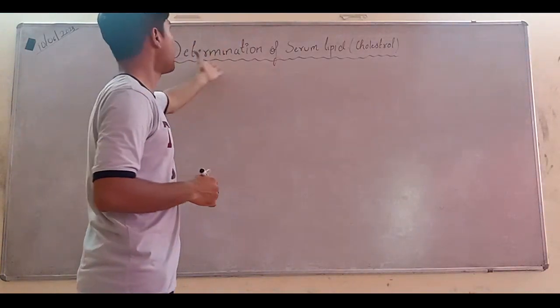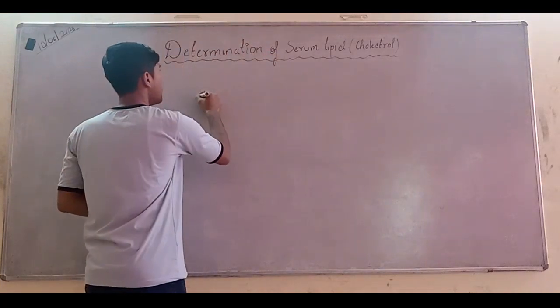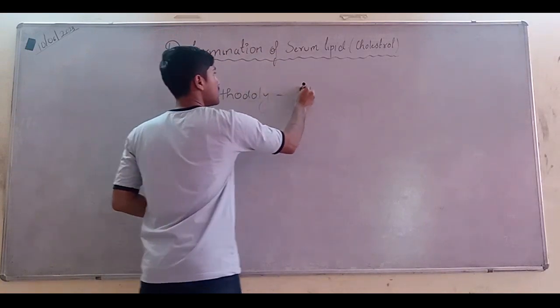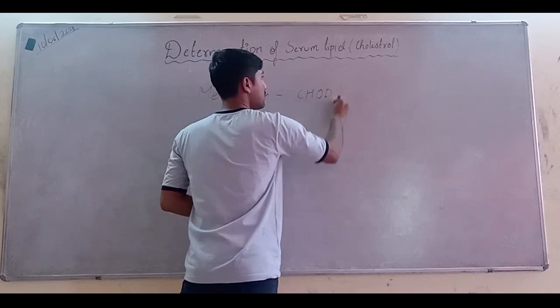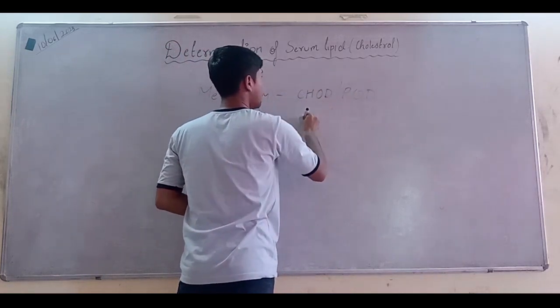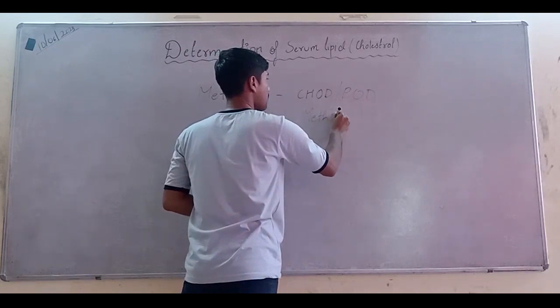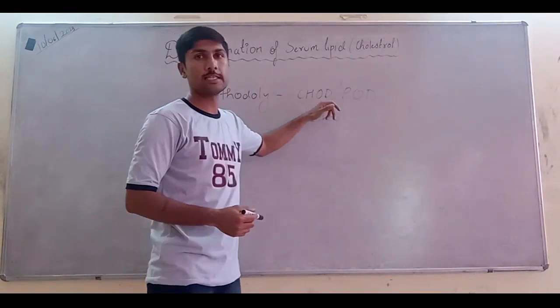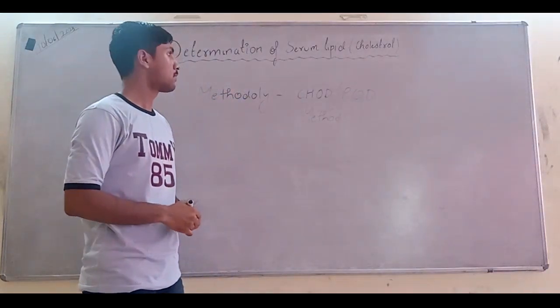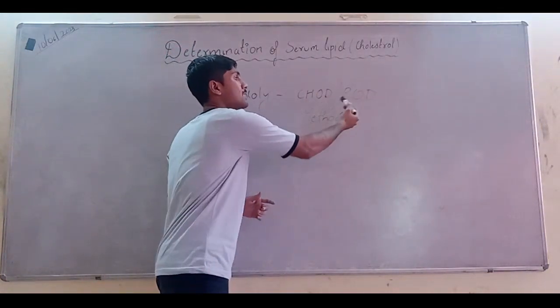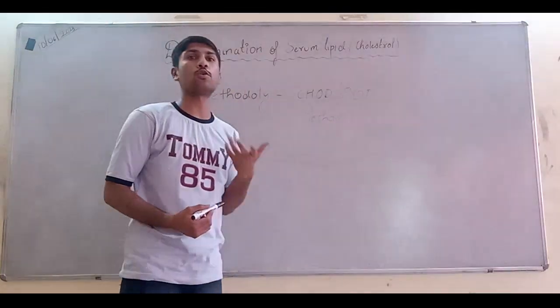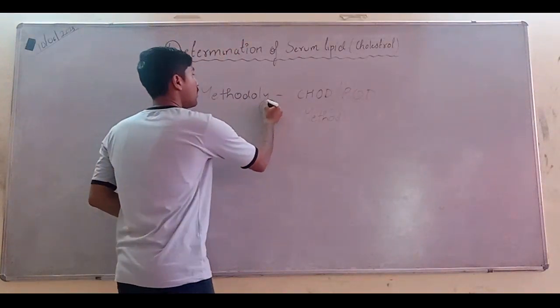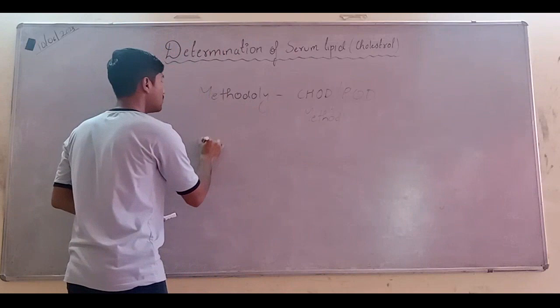Today we will study about how we will determine it, which method is used. So the methodology which is used for its determination is CHOD plus POD method. CHOD refers to cholesterol oxidase and POD refers to peroxidase. So we can say that cholesterol oxidase and peroxidase method is used for the identification of serum lipid or cholesterol.